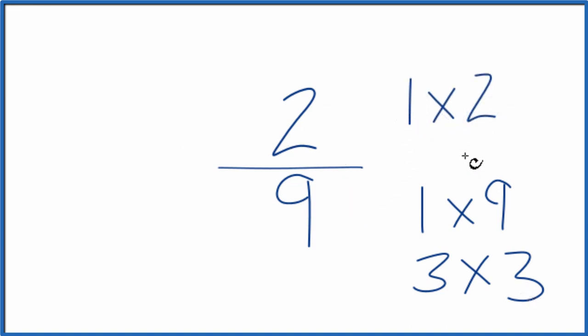So the greatest common factor between two and nine, that's just one. We divide two by one and nine by one, and we'll have simplified two ninths.